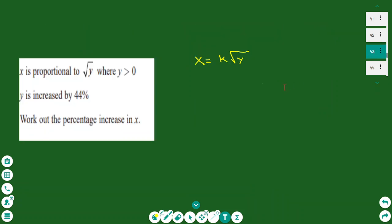Here I have x is proportional to the square root of y where y is positive. The y is increased by 44%. Find the percentage increase in x. So I want to find the percentage change when y changes by 44%.